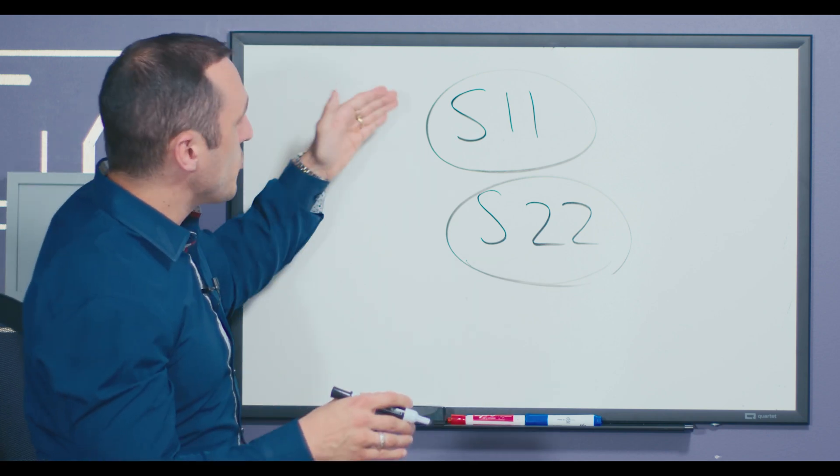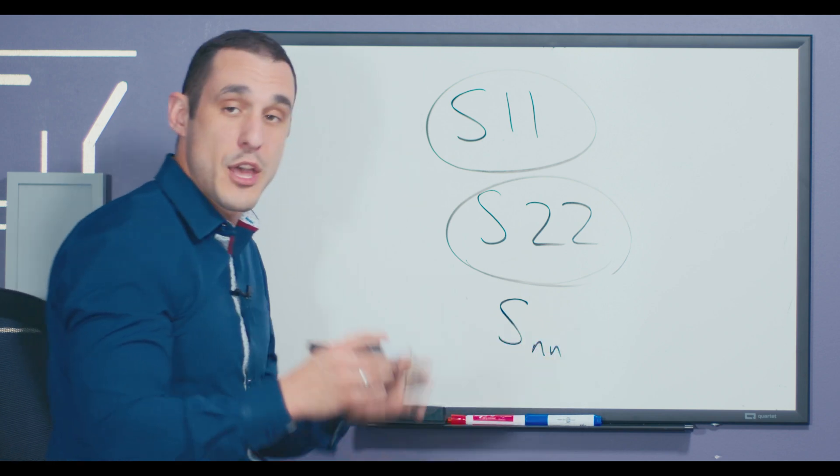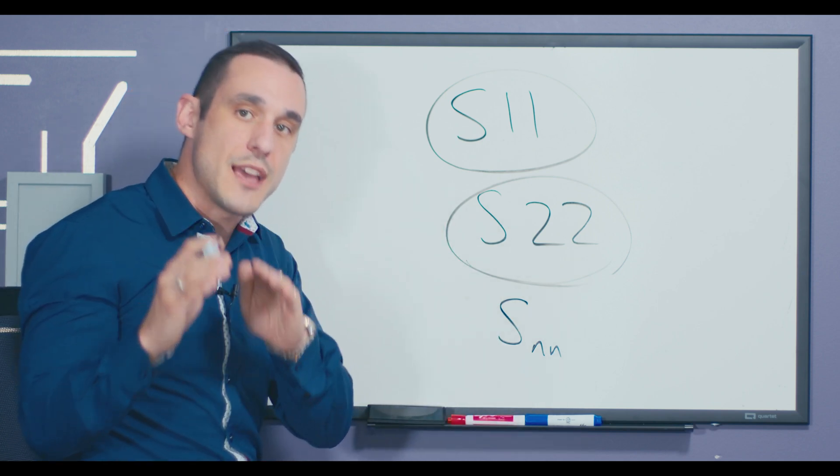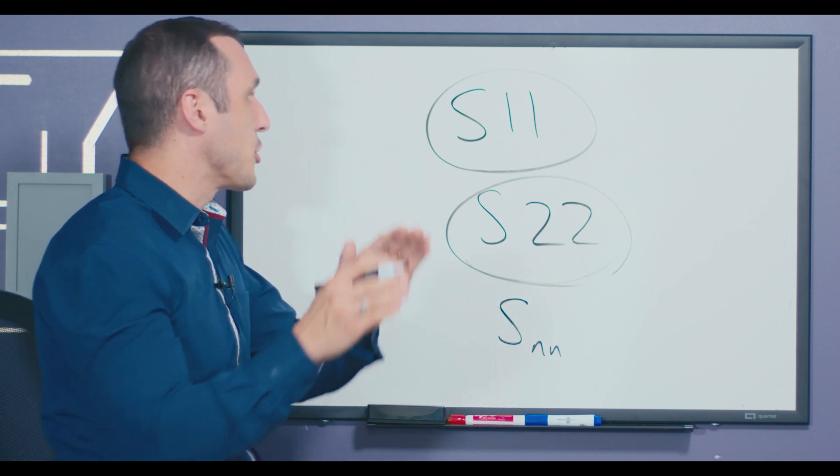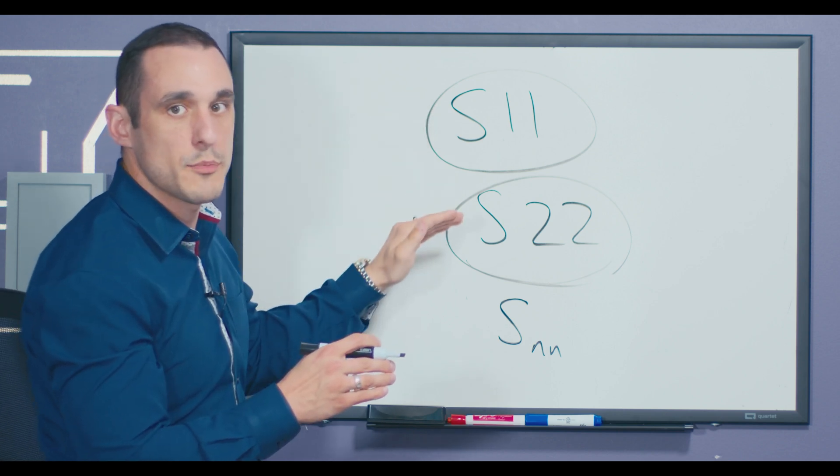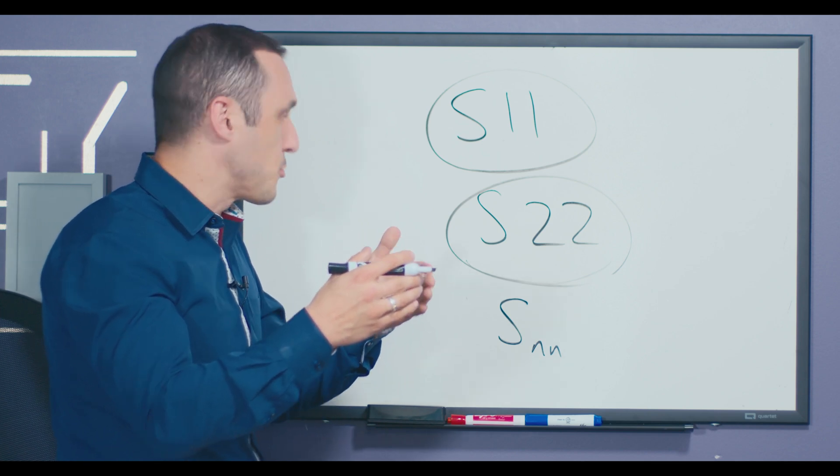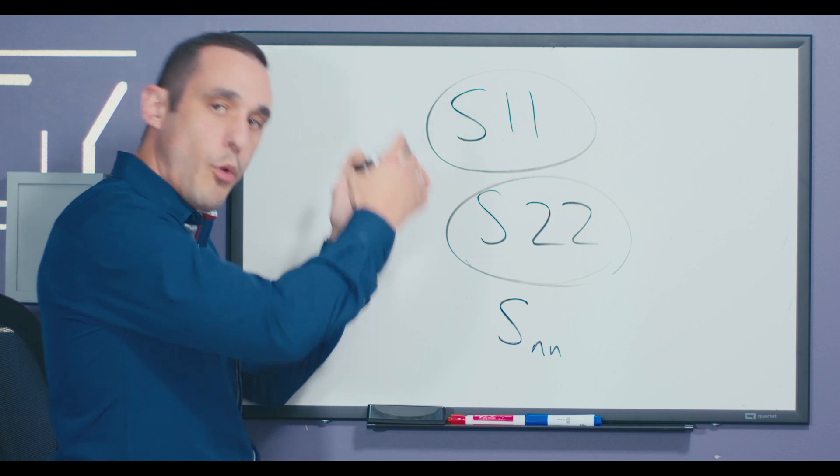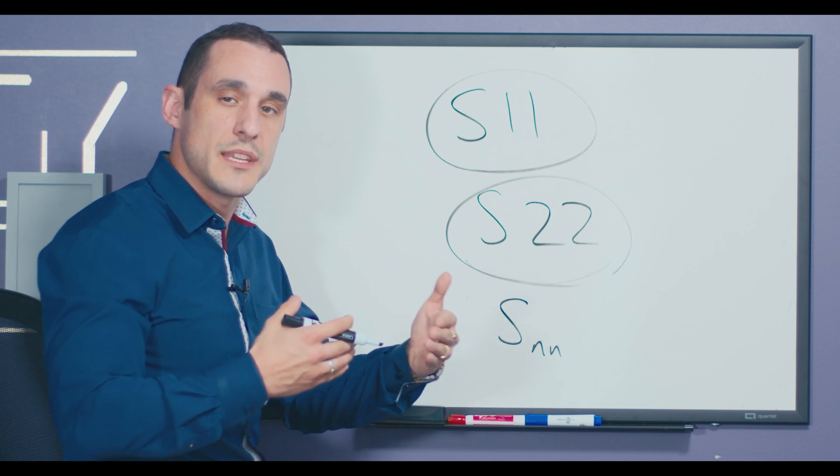Now one important thing to note about S11 or S22 or in general SNN measurements is that they are all comparative measurements. You are actually not measuring the impedance directly. What you're doing is you're looking at the amount of electromagnetic energy that is reflected from one of these ports, and you know that the amount of reflected energy is proportional to the difference in the impedances between the port impedance and the device under test. So really what you're doing is you're comparing two impedances.